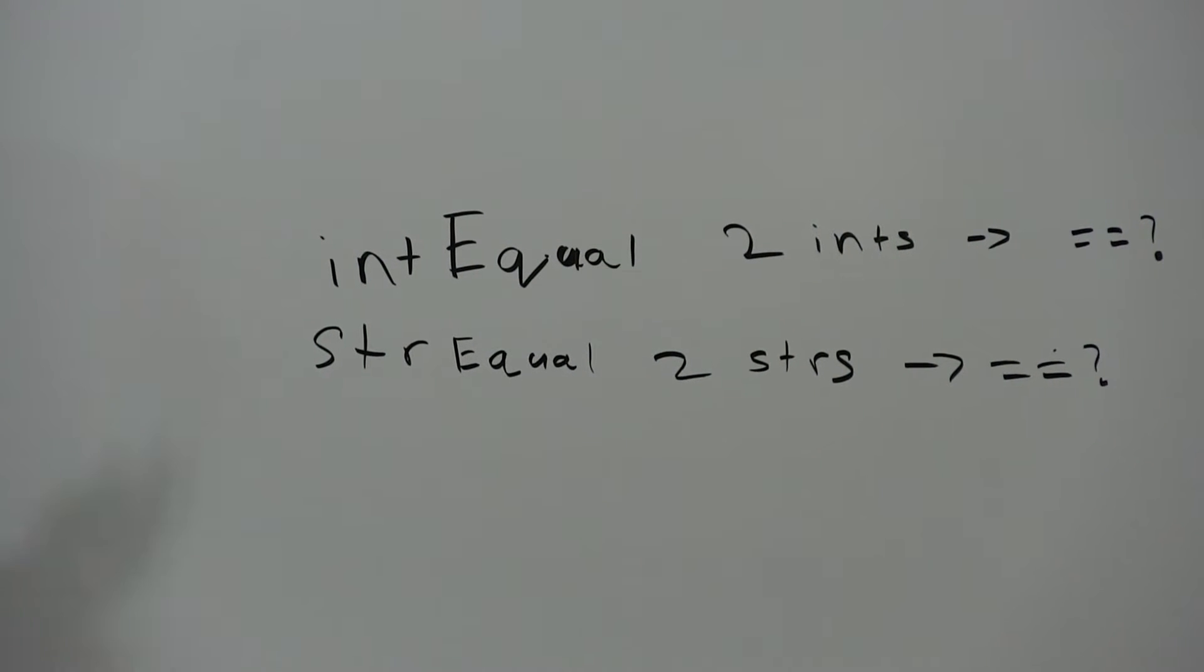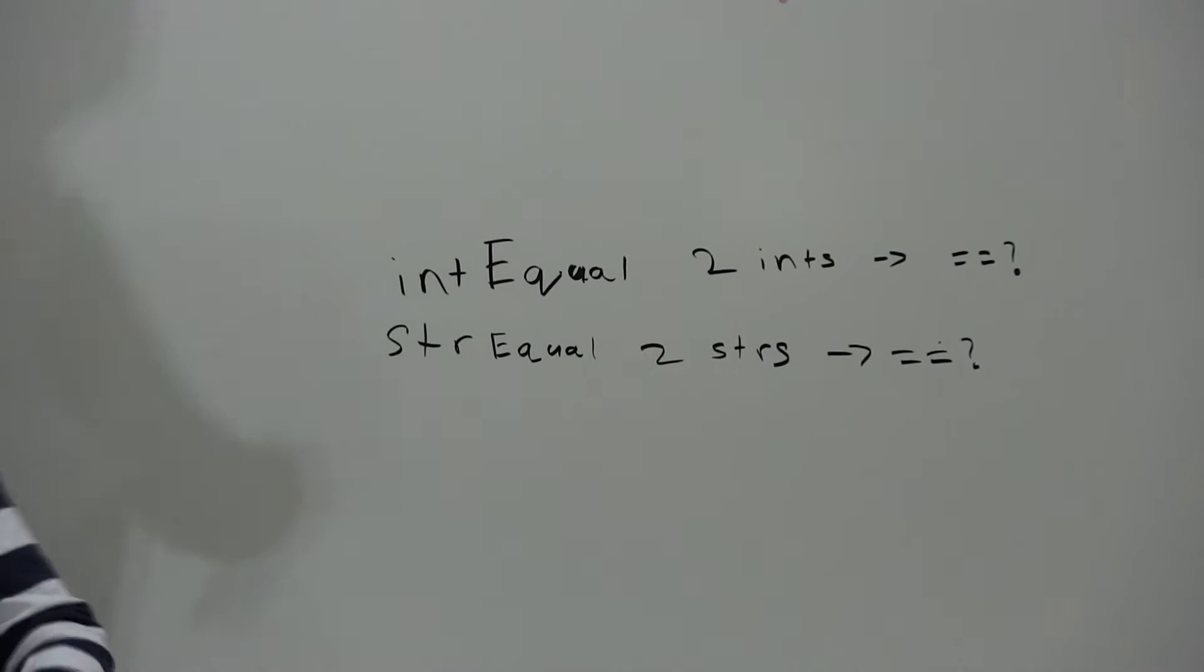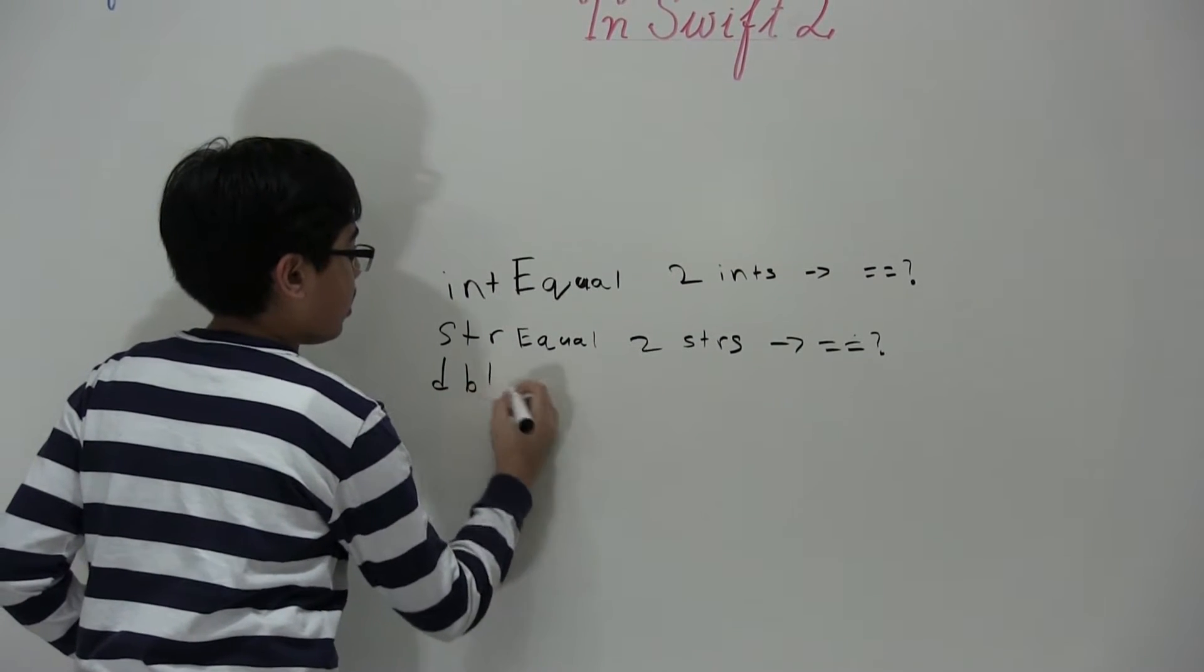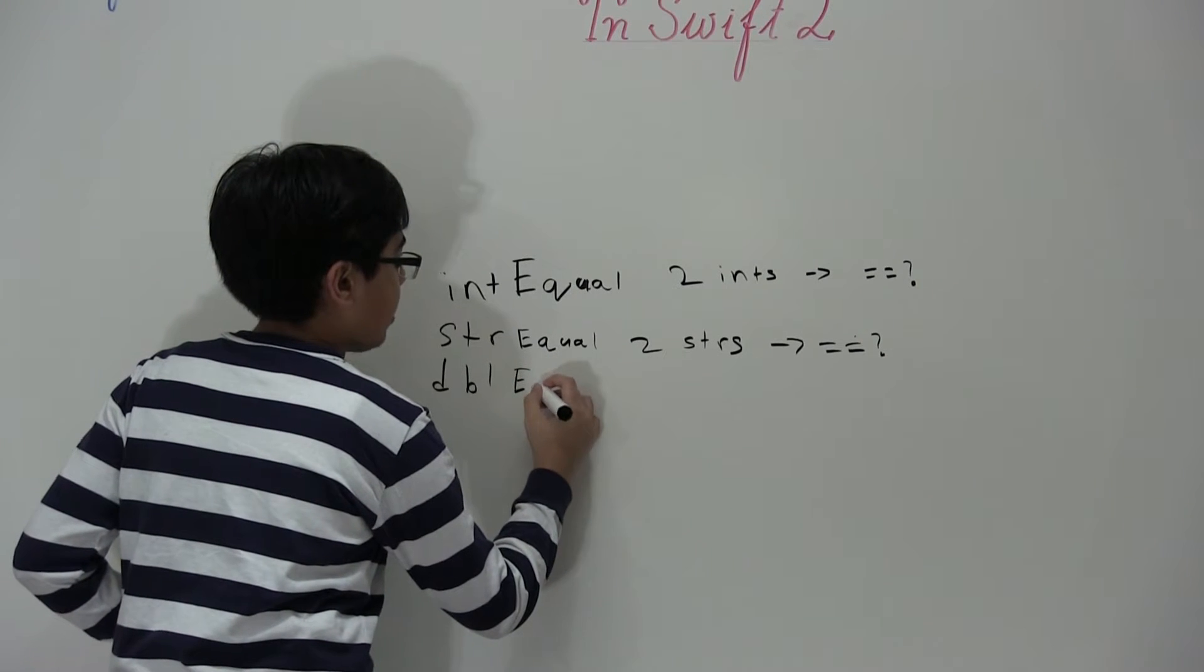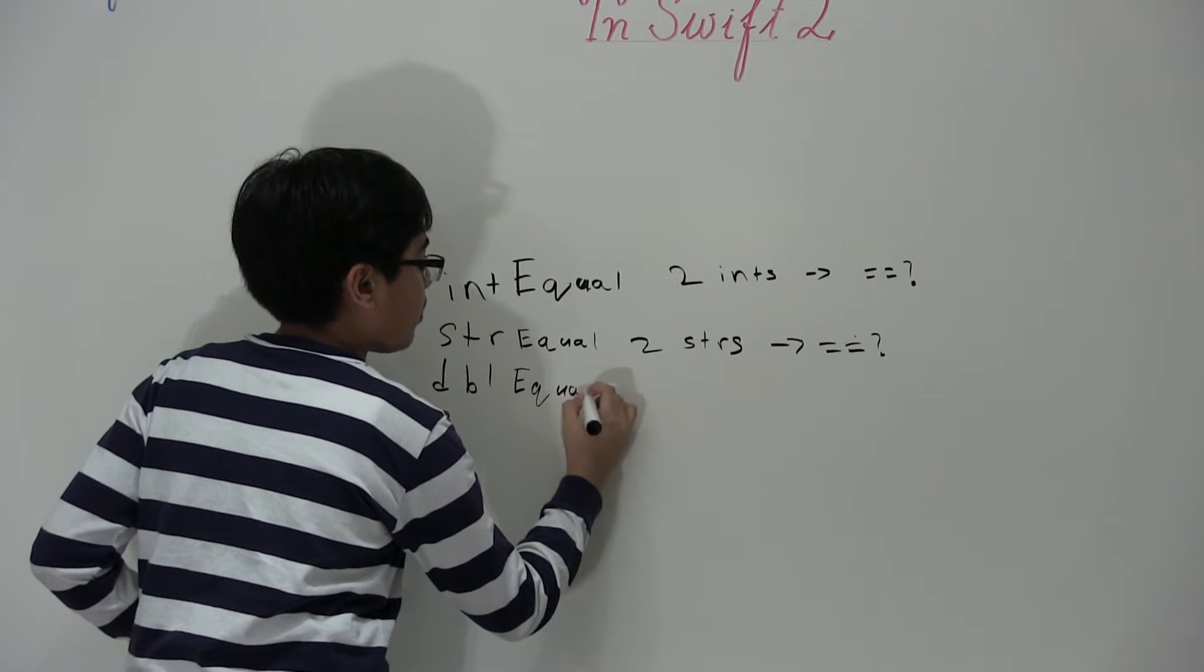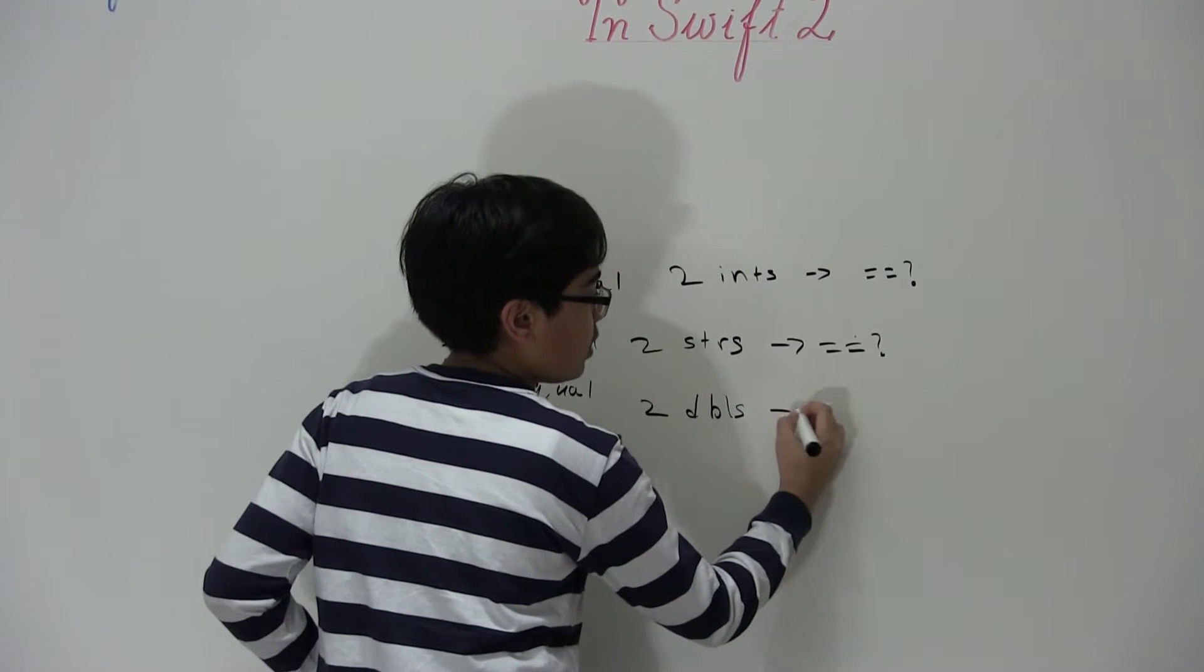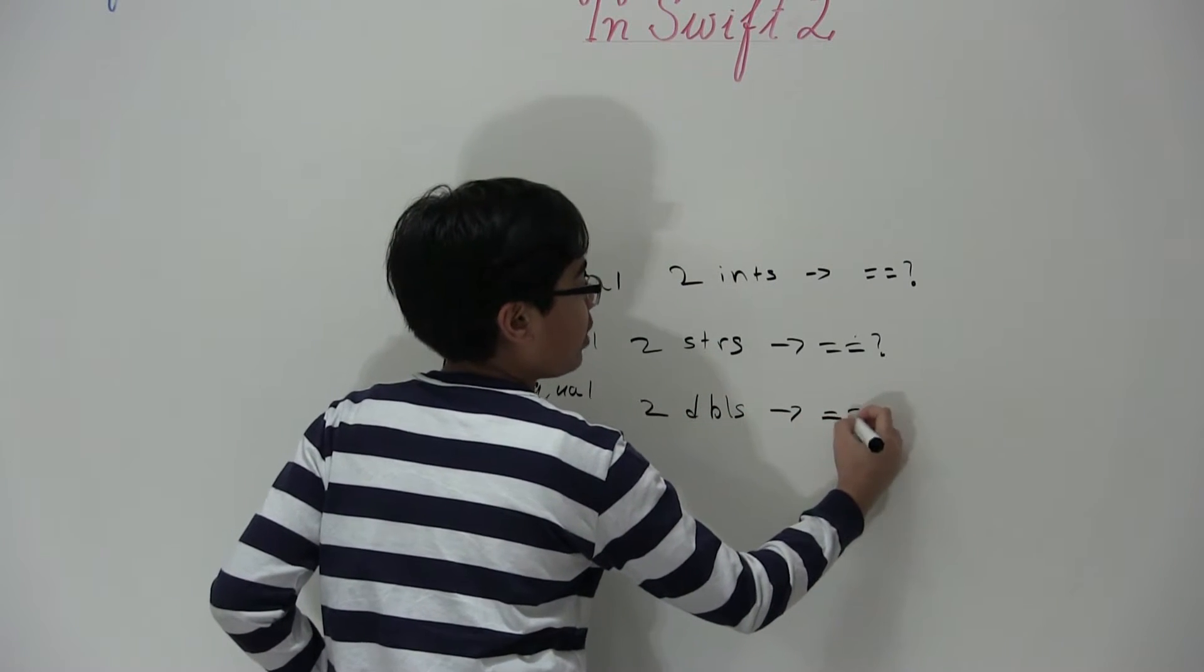Why not have one for doubles right, because we have to do decimals as well. So we're going to say double equal which takes two doubles and returns whether or not they're equal again.